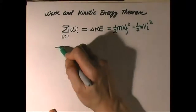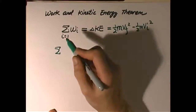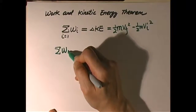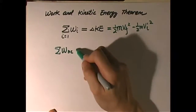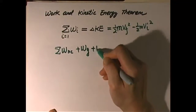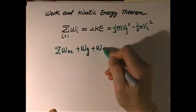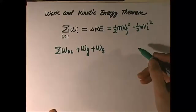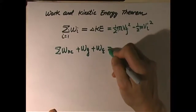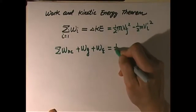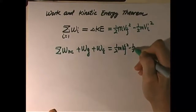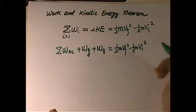Therefore, we can separate the total work done into work done by all the non-conservative forces, plus the work done by gravity, plus the work done by elastic force. That gives us the total work done, and the other side will have the final kinetic minus the initial kinetic.